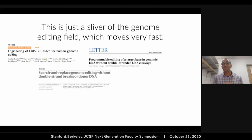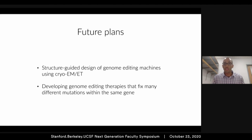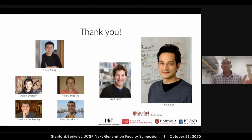I'll mention that this is a sliver of the genome editing field, which moves incredibly fast. Jennifer Doudna and Emmanuelle Charpentier recently were awarded the Nobel Prize for their work on Cas9 and its effects on genome editing. There have been so many new technologies developed — it's been quite exciting and a wonderful field to be part of. In the future, I'm interested in structure-guided design of genome editing machines using cryo-electron microscopy, and observing how they behave inside cells using cryo-electron tomography. I'm also interested in developing genome editing therapies that can fix many different mutations occurring within the same gene.